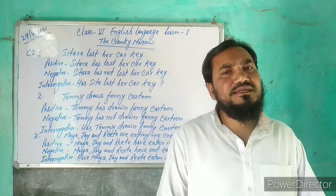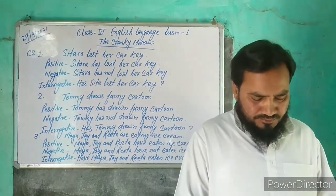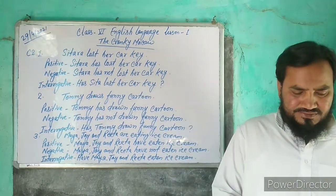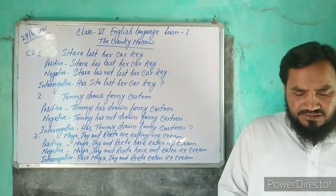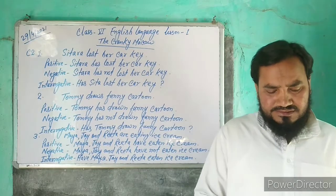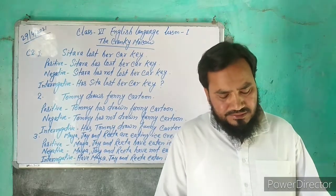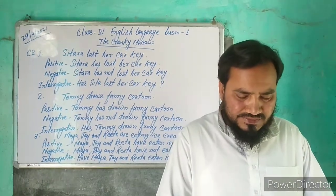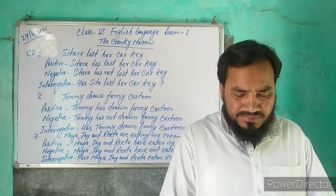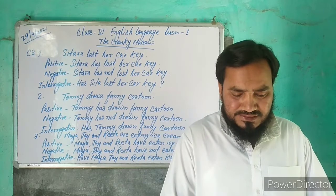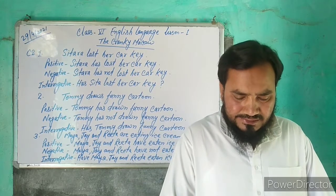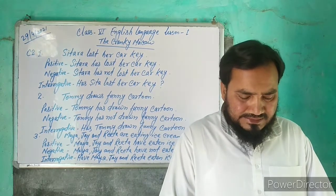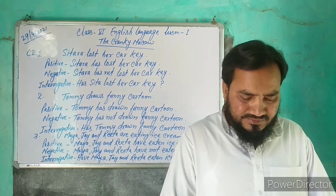Open Real English to page number 6 and see the question. It says: rewrite the following sentences in the present perfect tense, then as a negative sentence, and finally turn them into the interrogative form.